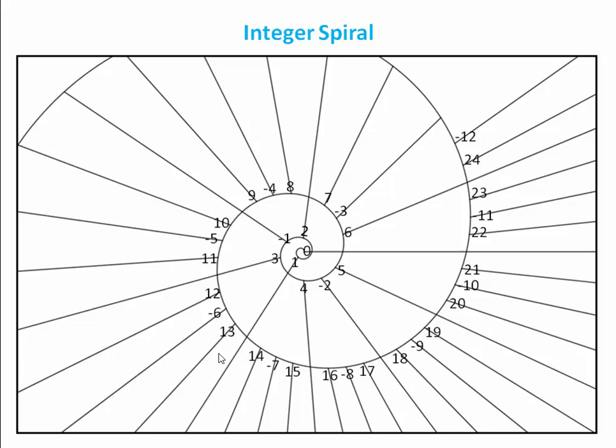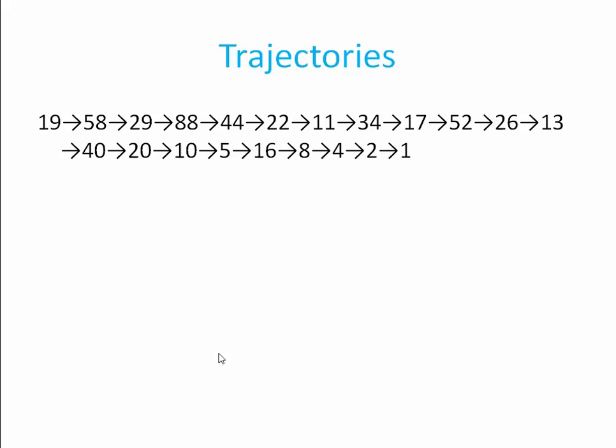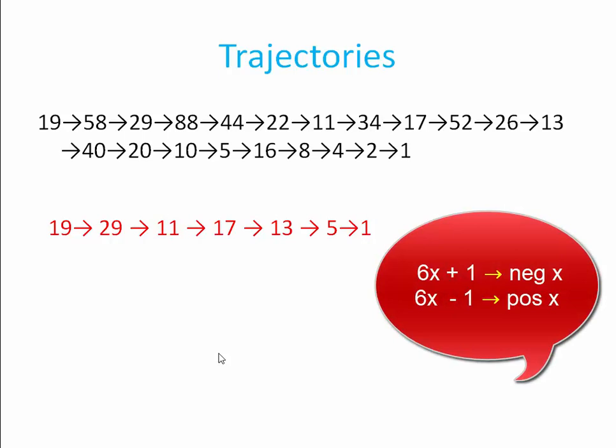I'll take the next few minutes to explain the relationship between the spiral you saw at the beginning and the Collatz problem. The numbers you are looking at are obviously the set of integers if the spiral continues indefinitely. I call it the integer spiral. If we consider the trajectory of the number 19, for example, this is what the Collatz trajectory looks like. If we consider only the odd numbers in this sequence, we get this sequence. All of these numbers are of the form 6x plus or minus 1. If we take the x in each number, if the number is of the form 6x plus 1, we make x negative. If the number is of the form 6x minus 1, we make x positive. Then we get negative 3, 5, 2, 3, negative 2, 1, 0. All belong to the spiral. This trajectory I call the spiral trajectory.